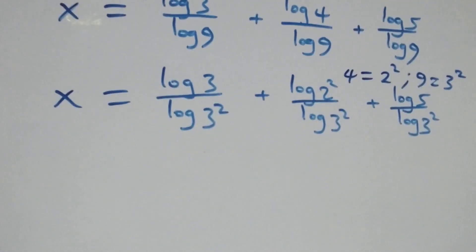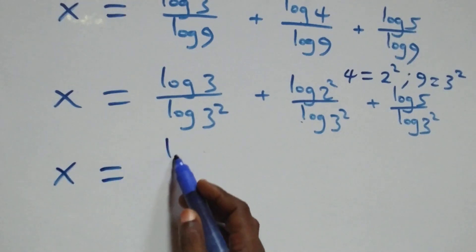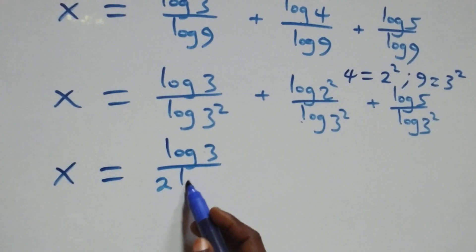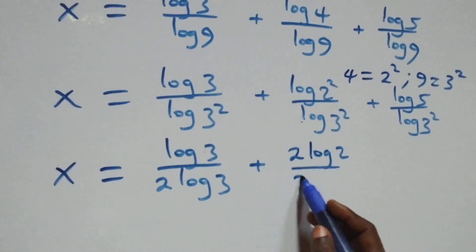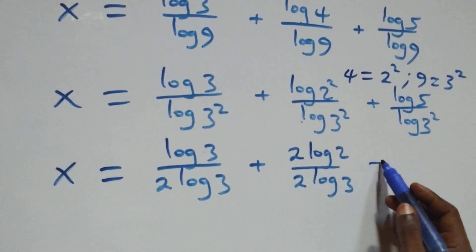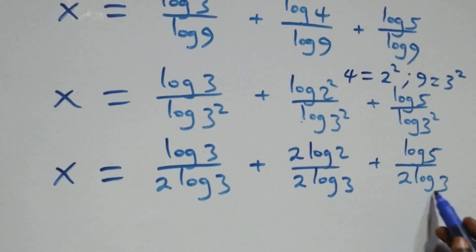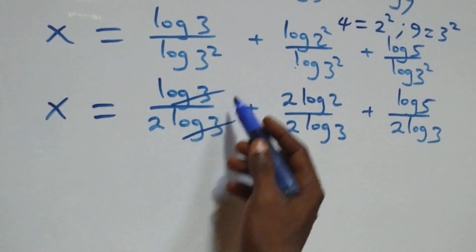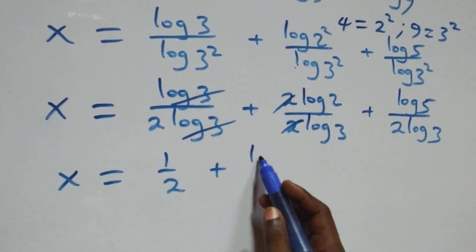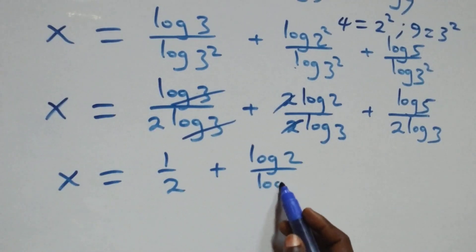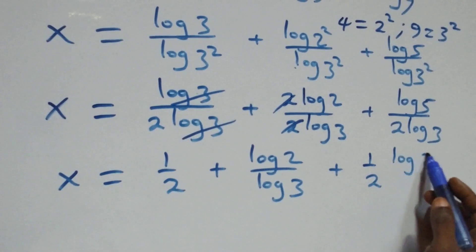Applying the power rule of logs, the exponents come out front. The 2s in the denominator simplify each term: log 3 over log 3 gives 1 over 2, log(2 squared) over log(3 squared) gives log 2 over log 3, and log 5 over log(3 squared) gives half times log 5 over log 3.